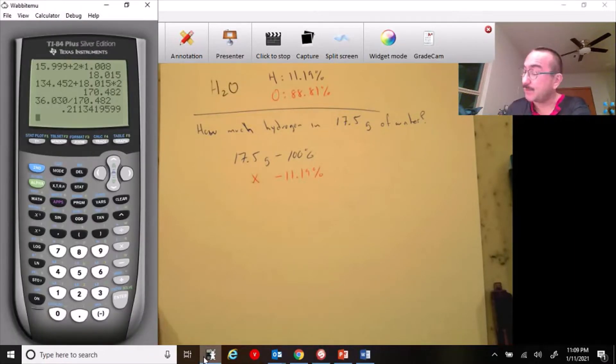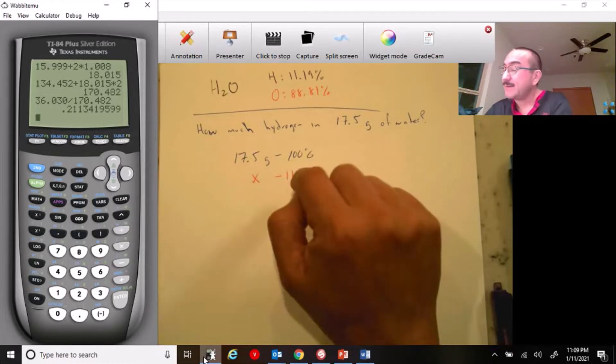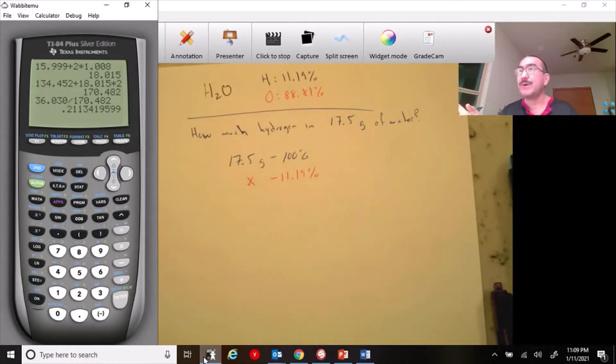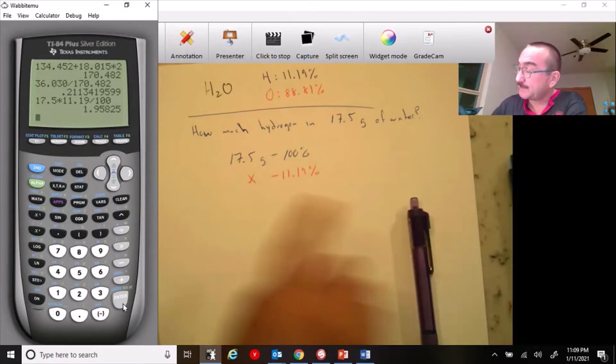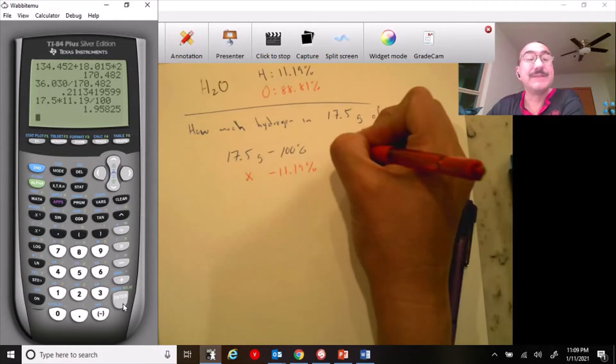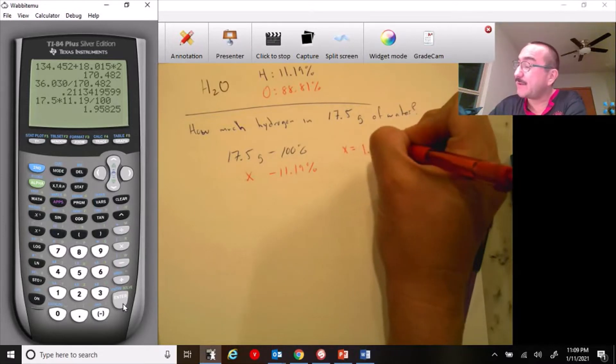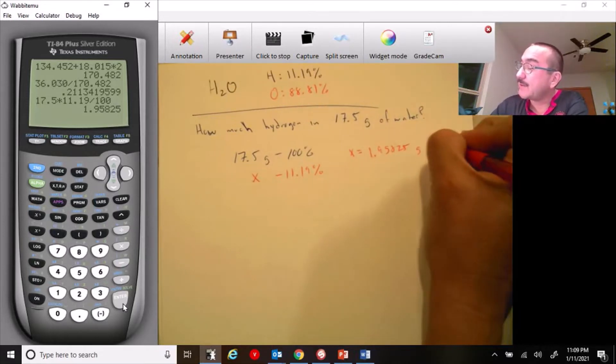When we put something like that in a proportion, I just have to say 17.5 times 11.19 divided by 100, or any way you want to solve that proportion. I'm not going to tell you how to do that. I mean, that proportion is something you learned like in third grade or fourth grade. So just solve the proportion, do the cross multiply, whatever you like. It doesn't matter. So I'm going to say 17.5, right, and I'm using my calculator, and multiply that by 100.